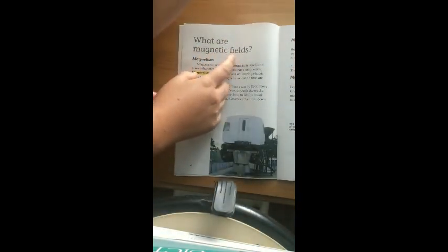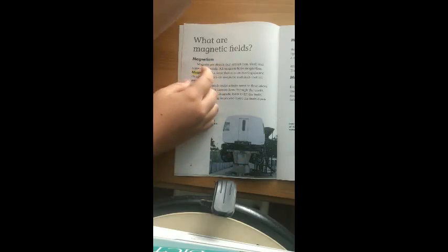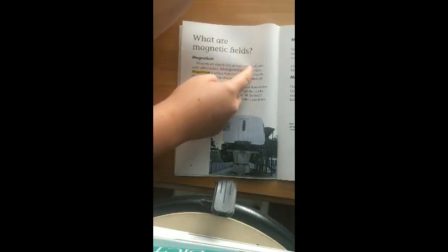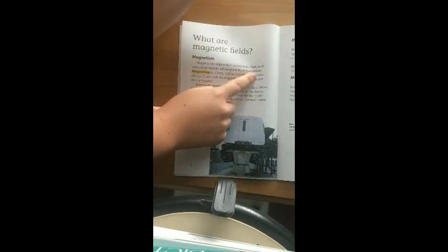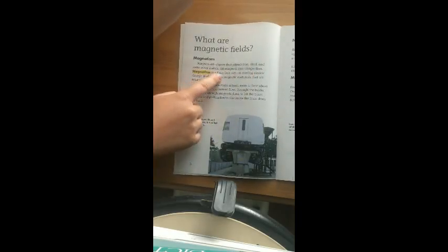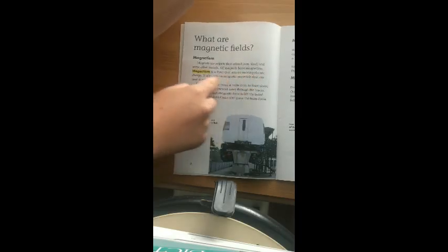What are magnetic fields? Magnetism. Magnets are objects that attract iron, steel, and some other metals. All magnets have magnetism. Magnetism is a force that acts on moving electric charge.